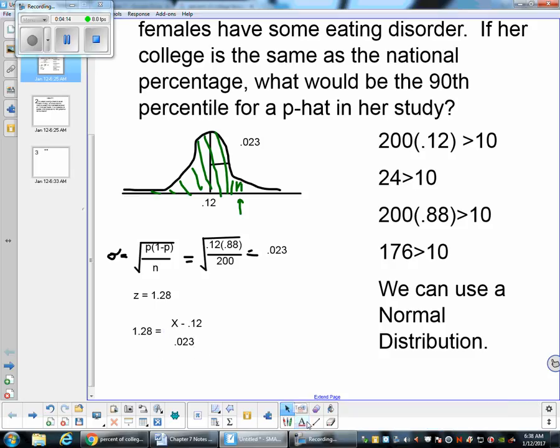Now we can just solve this by multiplying by 0.023. And I get 0.029475 equals x minus 0.12.